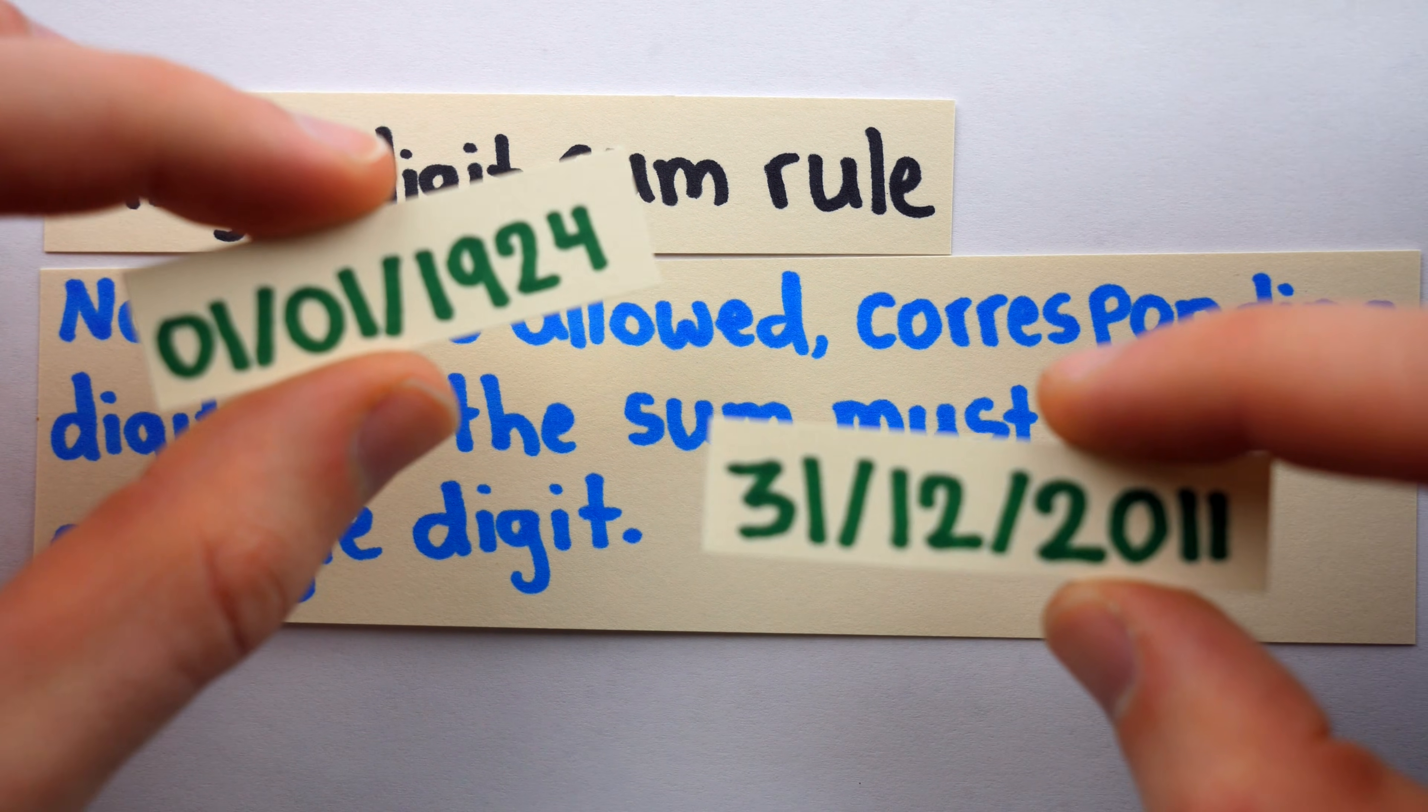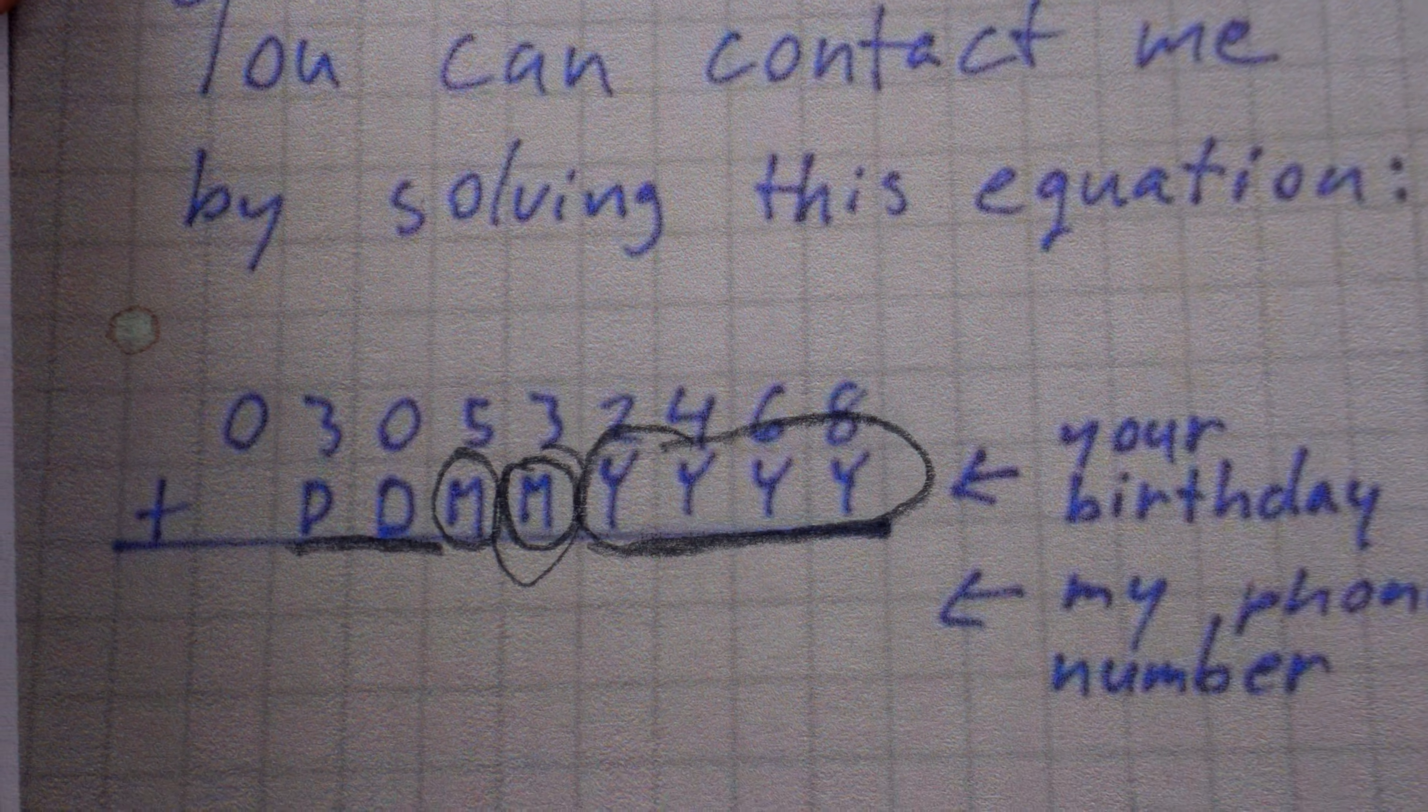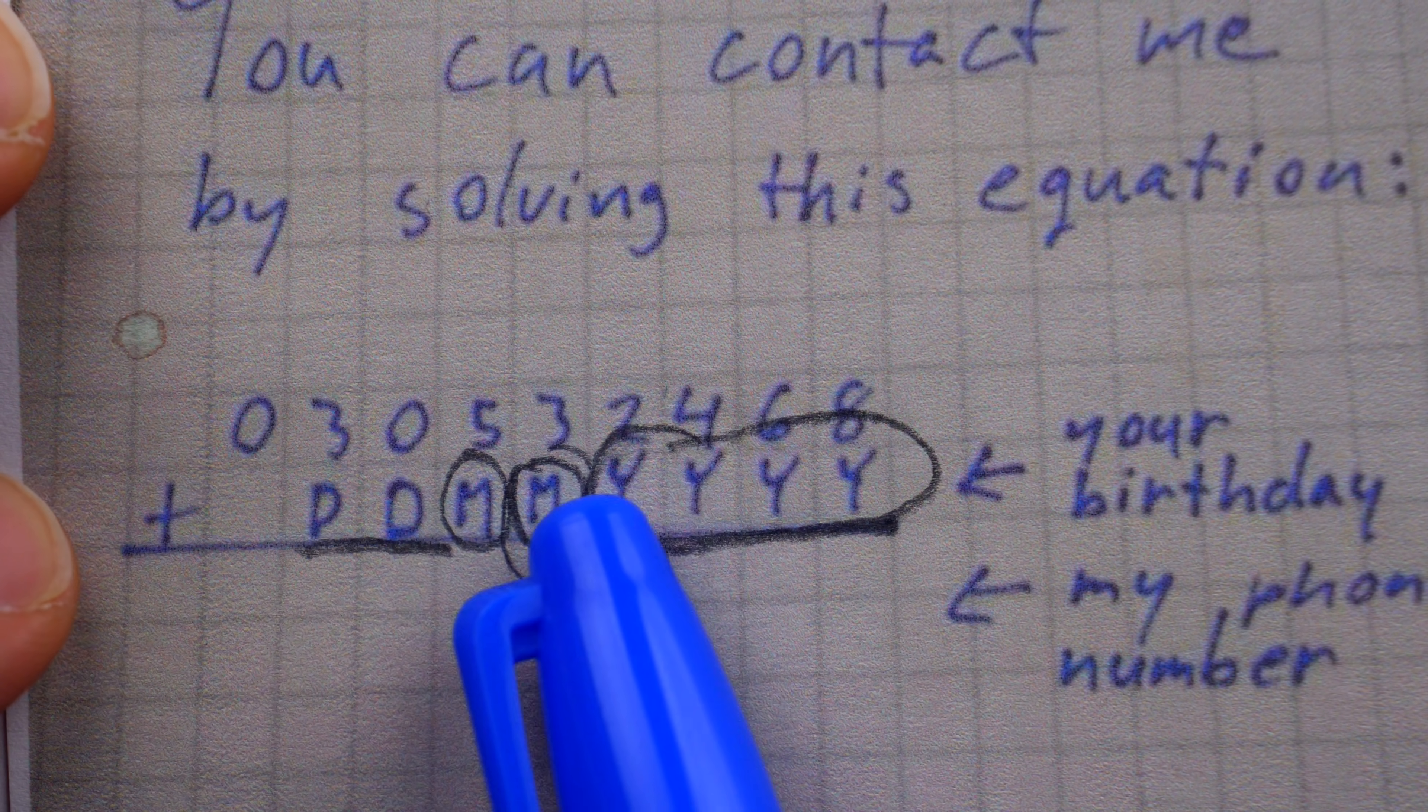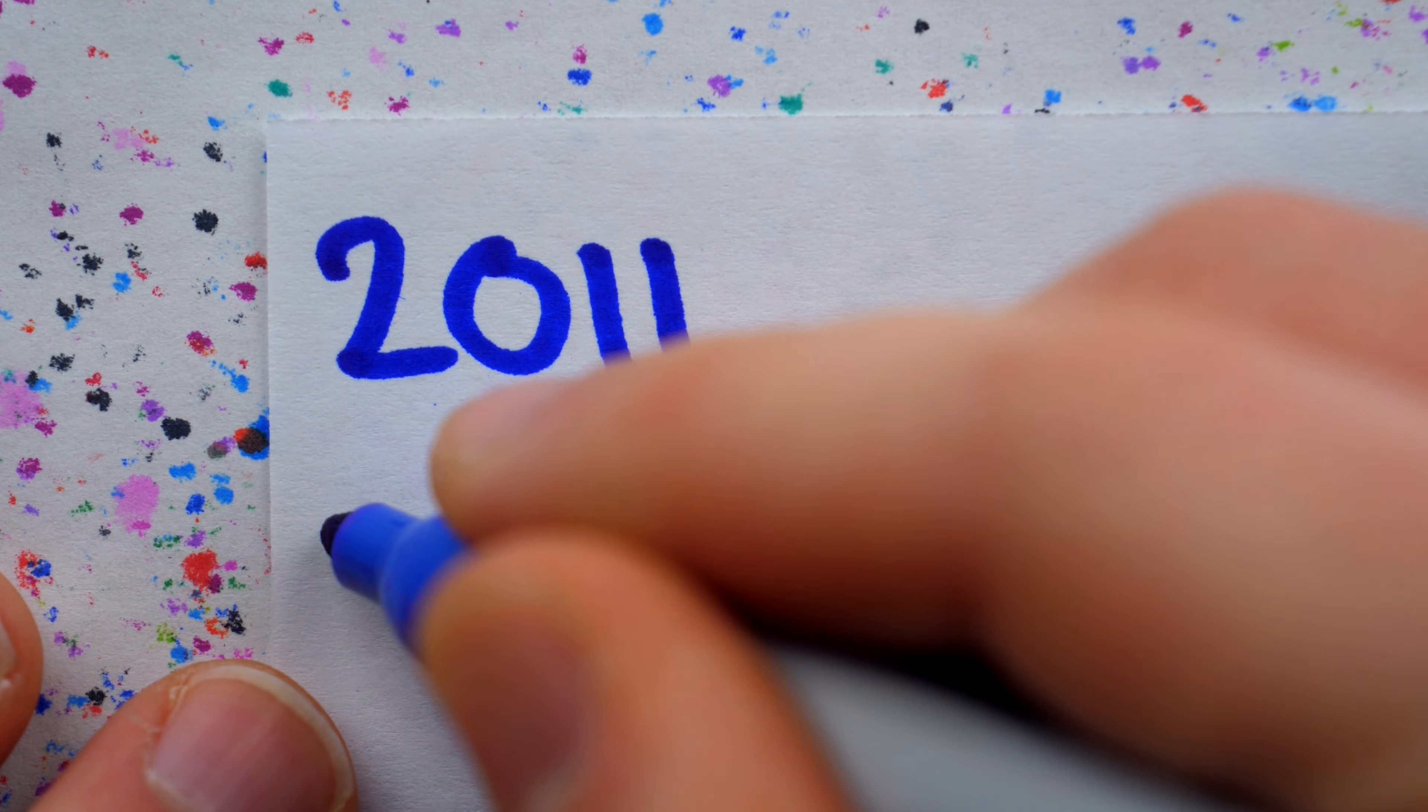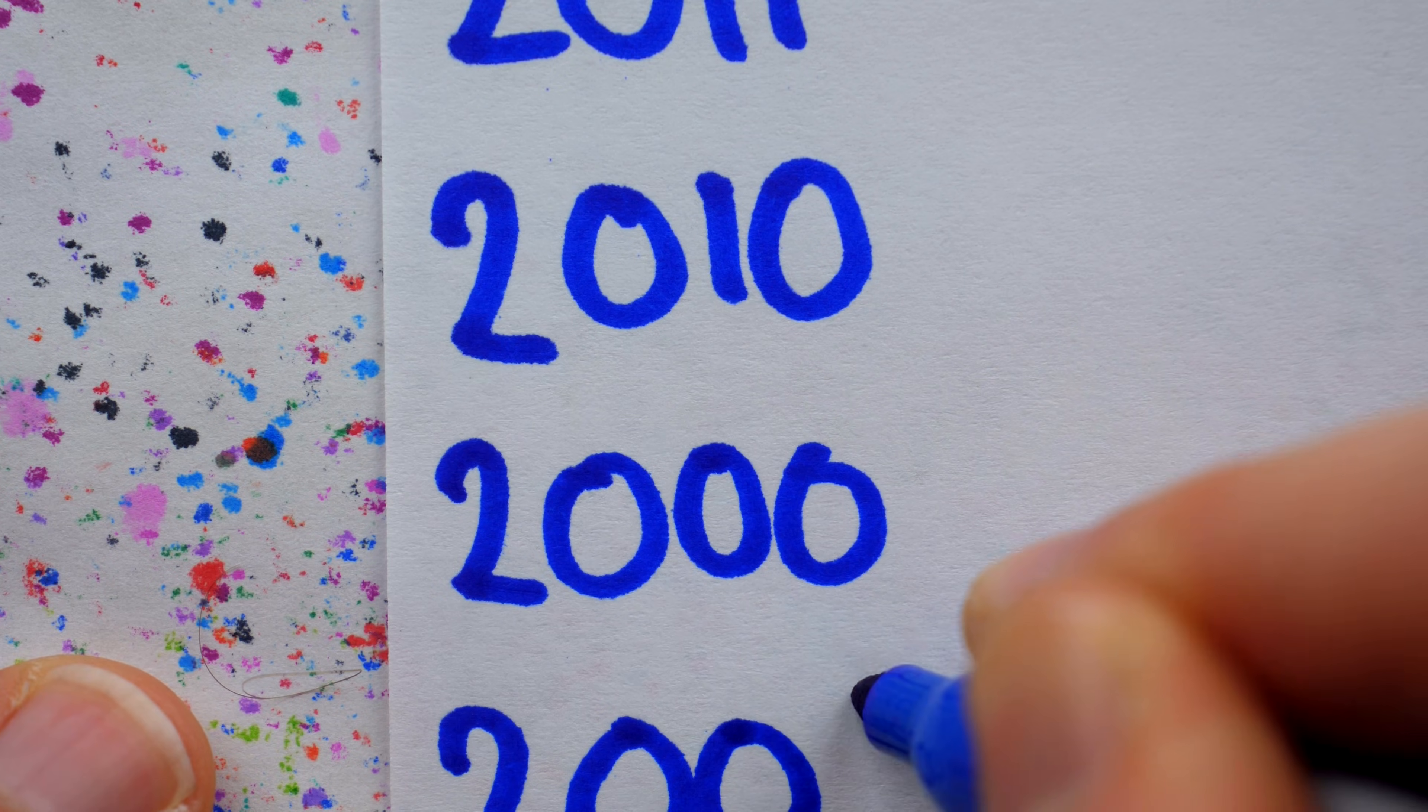When we do the addition, there shouldn't be any carrying. All eight pairs of corresponding digits should add to a single digit. Now between these two dates, which we agreed are the earliest and latest possible dates, most of the days are in the 1900s. But a date in the 1900s would cause a problem here because we'd have 9 plus 4, which breaks the single-digit sum rule. So the true owner's birthday then must be in the 2000s. It could be in 2011 or 2010. But because of this 8 at the end, the only other possible years are 2000 and 2001.